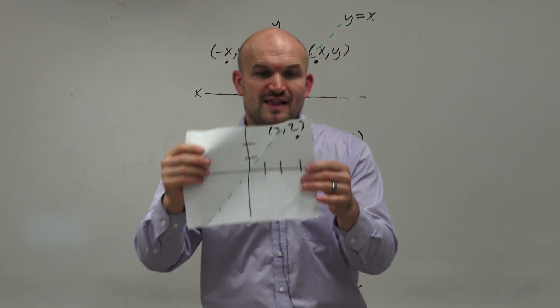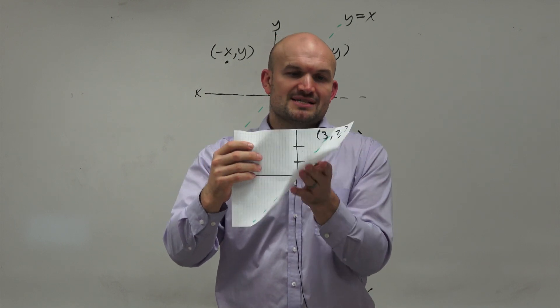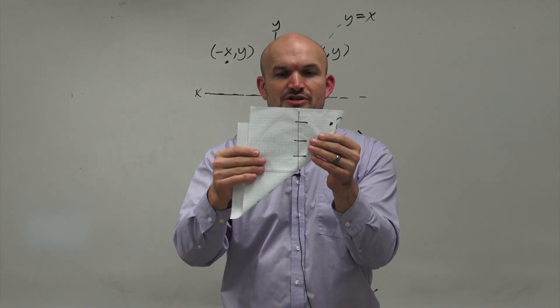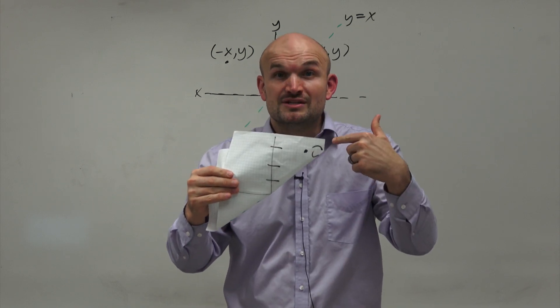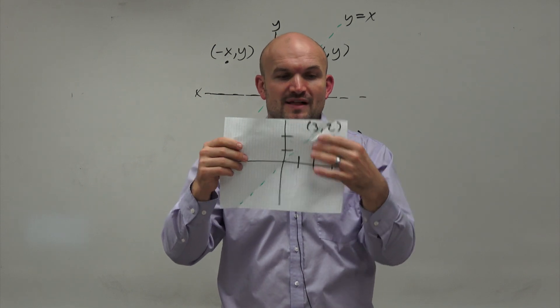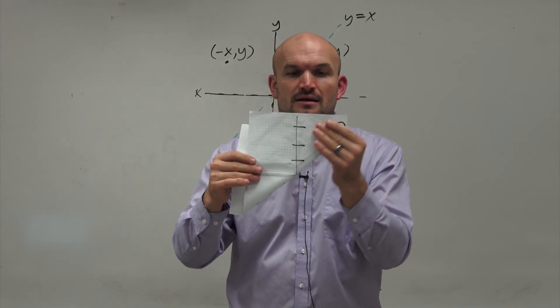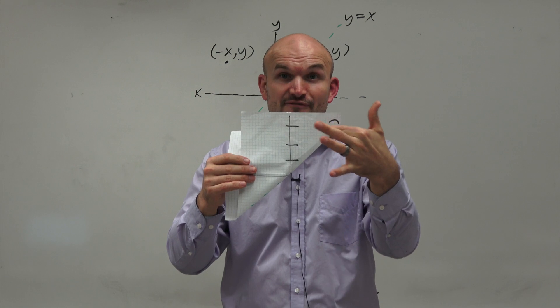Because if I reflect this point, when I reflect about the Y equals X line, notice which quadrant that this line is still in. It's still in the first quadrant. I can't negate the X or the Y. When I reflect about this Y equals X line, it's still in the first quadrant.